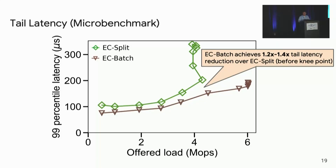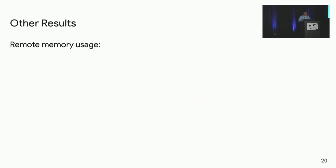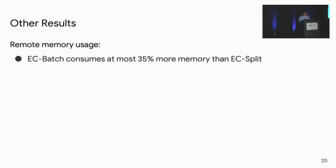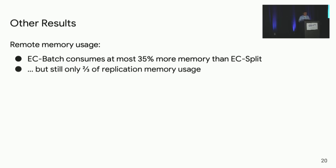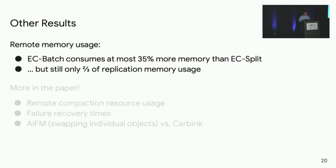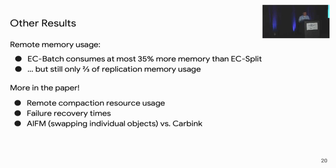Regarding remote memory usage, EC Batch has at most 35 percent more memory usage than EC Split due to remote compaction being off the critical path. But it is still only two-thirds of the replication memory usage. There are more results in the paper — do check it out.